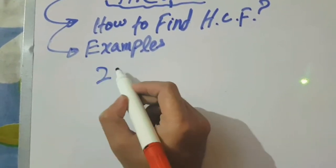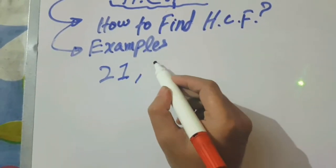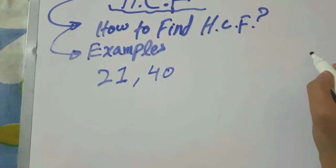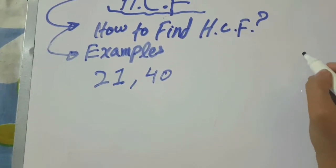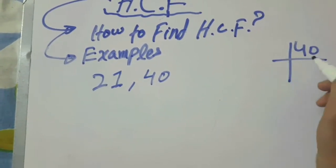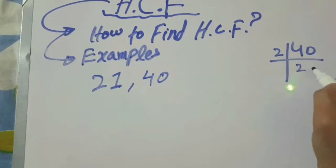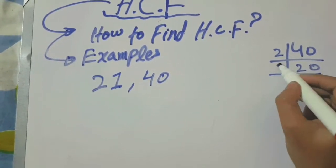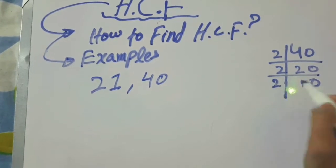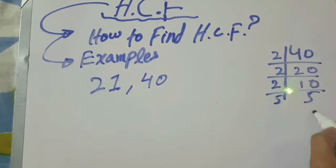Now let's take another example: 21 and 40. First divide 40 by 2: 2 twenties are 40, 2 tens are 20, and 2 fives are 10, then 5 ones are 5.